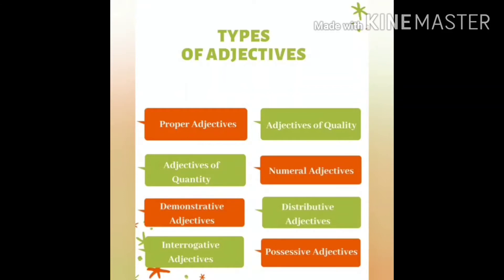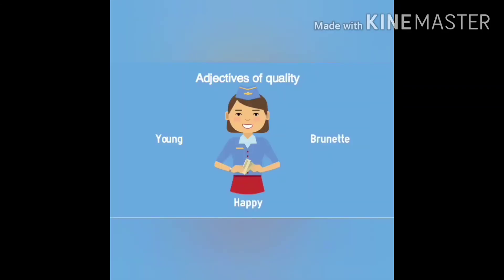Let's talk about adjectives of quality first. Adjectives of quality describe the quality of a noun — such as shape, size, color, nature, or state and condition. They answer the question 'what kind of?' For example: 'Neetha does not like the smell of ripe jackfruit' and 'draw a big circle.' Here the words 'ripe' and 'big' describe the nouns 'jackfruit' and 'circle' respectively.